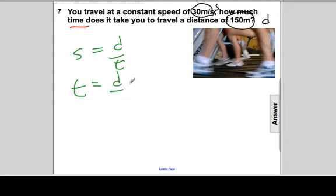I'll take a moment and substitute the information in from the problem. The distance that was traveled in this was 150 meters divided by the speed of 30 meters per second.